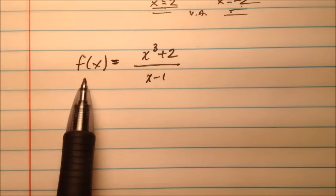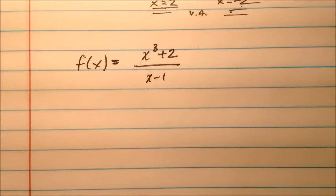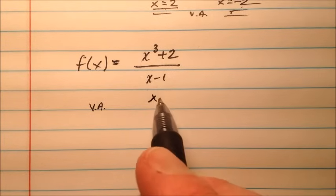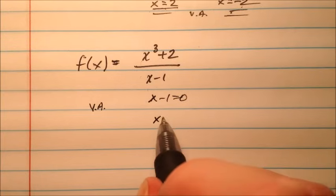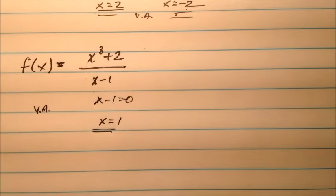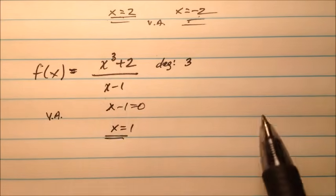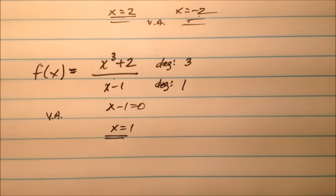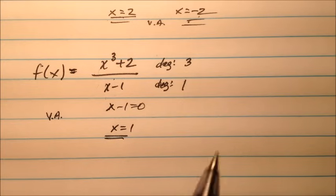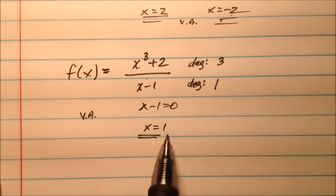In our fourth example, f of x equals x cubed plus 2 over x minus 1. The vertical asymptote comes from x minus 1 equals 0, so x equals 1. For the horizontal asymptote, the degree of the numerator is 3 and the degree of the denominator is 1. When the degree of the numerator is bigger than the degree of the denominator, there is no horizontal asymptote. So the only asymptote is a vertical asymptote at x equals 1.